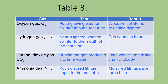For hydrogen gas, hold a lighted wooden splinter near the mouth of the test tube — just at the mouth — and a pop sound is heard. For carbon dioxide gas, bubble the gas produced into limewater, or you may channel or flow the gas into it. The observation: the limewater turns milky, chalky, or cloudy — choose one word only.